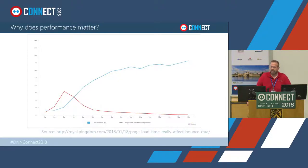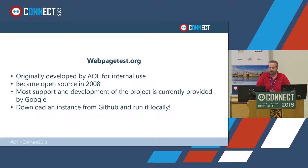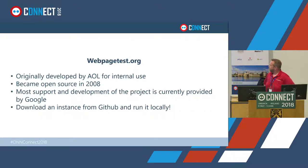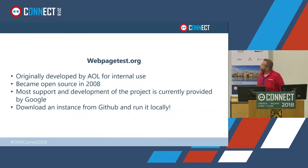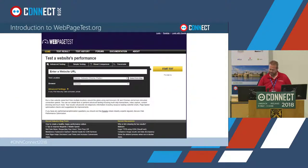We're going to talk about WebPageTest.org. There are a lot of tools out there — Google has a wonderful tool, as does Pingdom — but WebPageTest.org is one of the originals. It was originally developed by AOL for internal use, became open source in 2008, and is currently maintained mostly by Google given their focus on website performance. You can also download an instance from GitHub and run it locally.